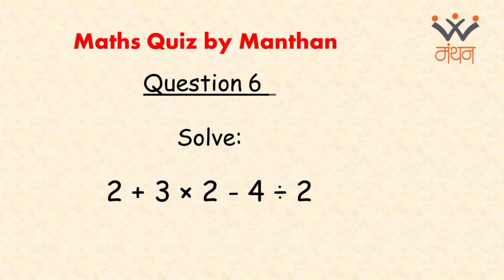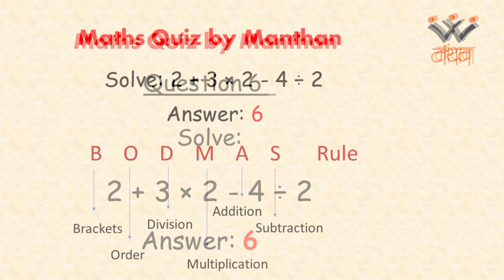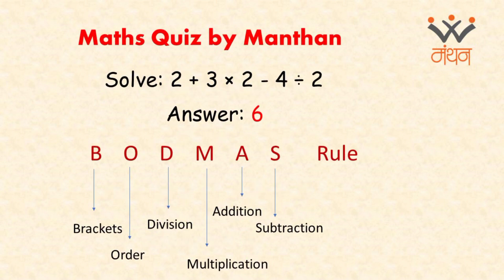Question number 6: solve 2 plus 3 into 2 minus 4 divided by 2. The answer is 6. If your answer is correct, that clearly indicates you are well acquainted with BODMAS rules. BODMAS is an acronym to help children remember the order of operations in calculations. It stands for Brackets, Order, Division, Multiplication, Addition, and Subtraction.